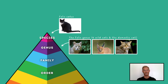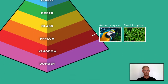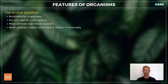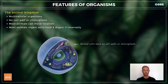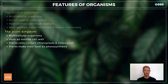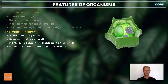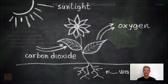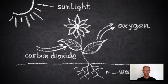In our last lesson we looked at classifying organisms into species and genus, which is a group of closely related species. On a much broader level, organisms can be grouped into kingdoms, two of which are the animal kingdom and the plant kingdom. Animals are multicellular organisms whose cells have no cell walls or chloroplasts. Most animals ingest solid food and digest it internally. Plants are also multicellular, but unlike animals their cells have an outside cell wall, and they contain chloroplasts as they make their food using sunlight via photosynthesis.